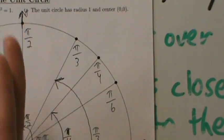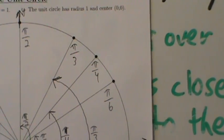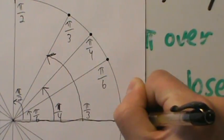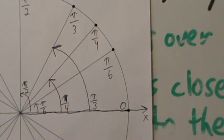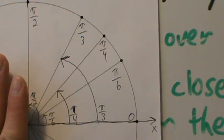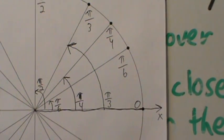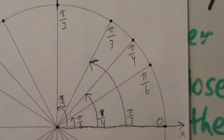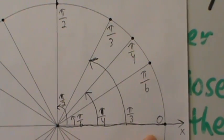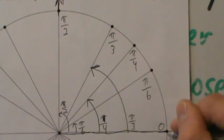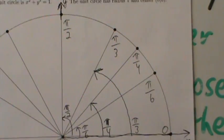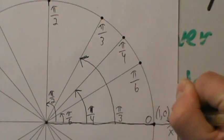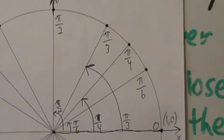Now we want to fill in the coordinates of these points. The angle right here at zero radians — for angles in standard position, the initial side is on the positive x-axis and the vertex is at the origin. So this is zero radians, and the point here is (1, 0). At pi over 2 radians, which is directly on top of the unit circle, the point is (0, 1).